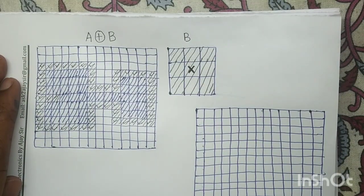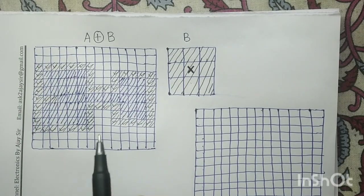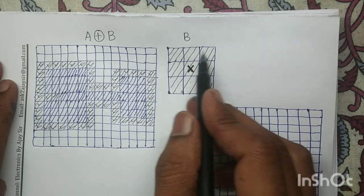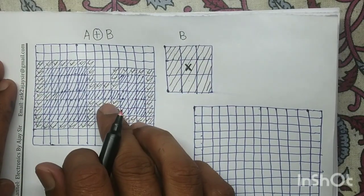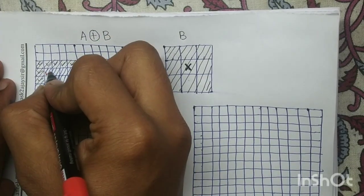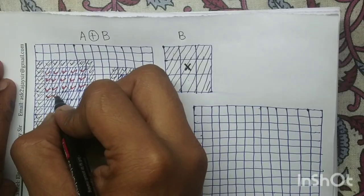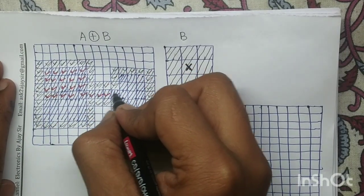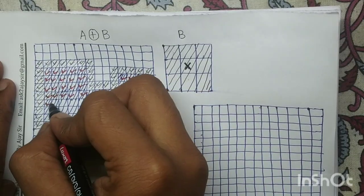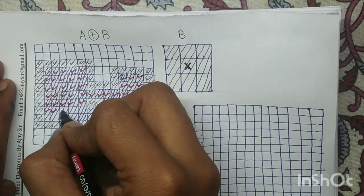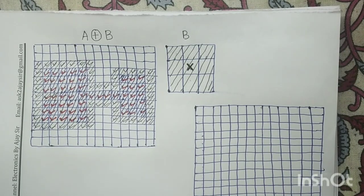Now on this dilated image, we have to compute the erosion operation with the same structuring element B. In this dilated output, we have to find those pixels whose center value is also logic 1 and whose 8 neighboring pixels are also logic 1. If you compute the erosion operation with this structuring element on this dilated output, you will find these pixels, which satisfy the erosion conditions and will be part of the eroded output.